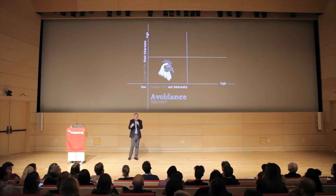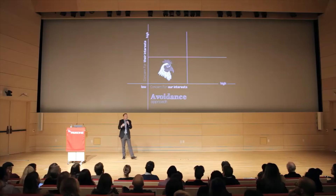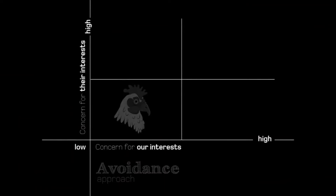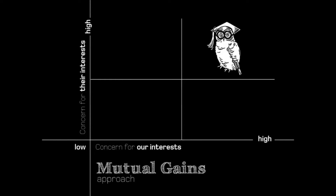The challenging thing — and I think the best approach — is to look for an approach where you do both: where you simultaneously show concern for your own interests and concern for the other side's interests. A mutual gains approach, looking for something that can satisfy both sides.